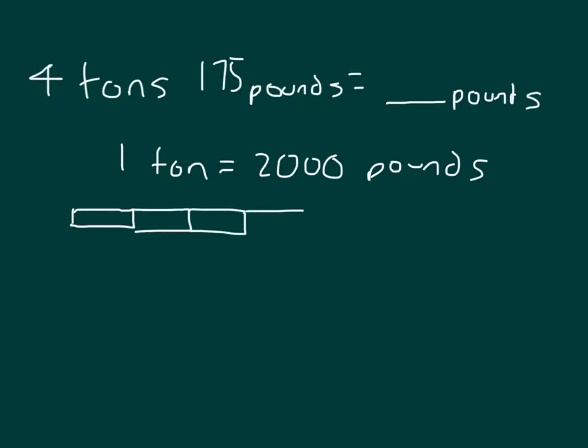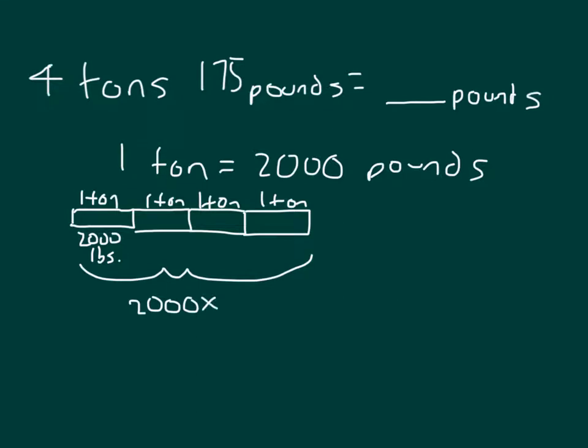It's 1, 2, 3, 4 tons. We know that this is 1 ton, which also equals 2,000 pounds. And how many of them do we have? We have 1 ton, 2 tons, 3 tons, and 4 tons.